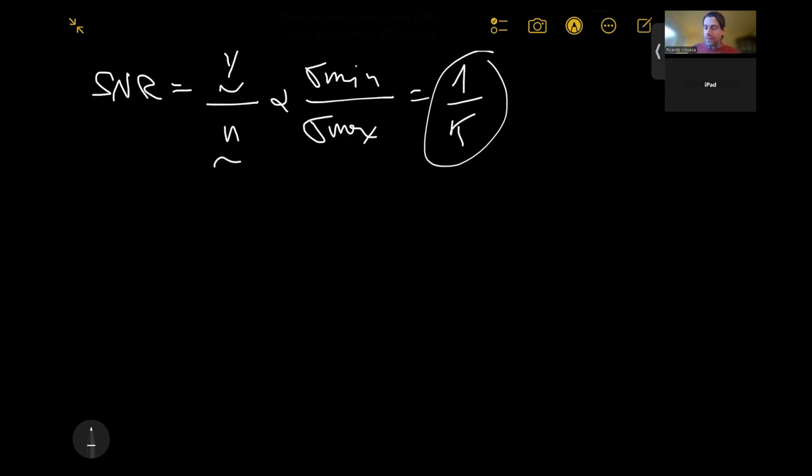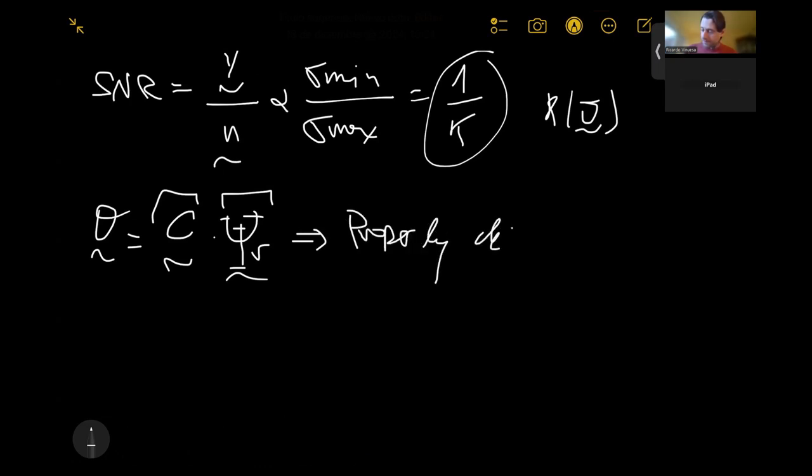The only thing I can act on, remember, is the condition number of theta. Theta is the product of the measurement matrix C and the tailored transformation. This is given by the data, this is given by the measurement locations. The only thing I can act on is matrix C, my measurement locations. So we need to properly design C, and we're going to do that with QR pivoting. I left you with a cliffhanger in the previous video.